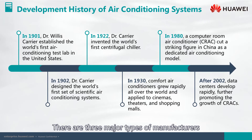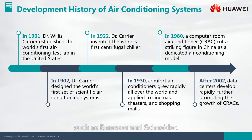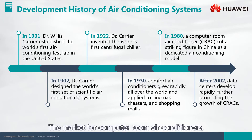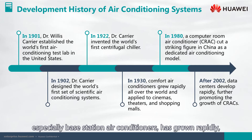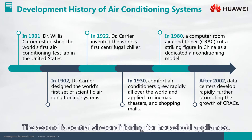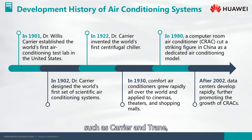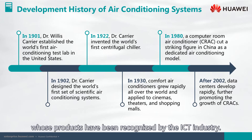There are three major types of manufacturers in the air conditioner market. The first is traditional computer room air conditioner manufacturers such as Emerson and Schneider. The market for computer room air conditioners, especially base station air conditioners, has grown rapidly and developed into a more complete product line. The second is central air conditioning for household appliances. The third is large-scale chiller manufacturers such as Carrier and Trane, whose products have been recognized by the ICT industry.